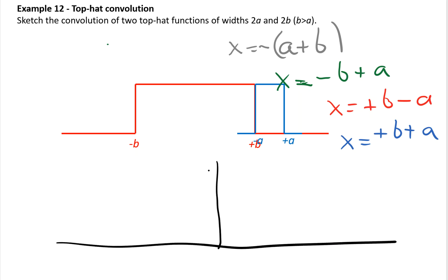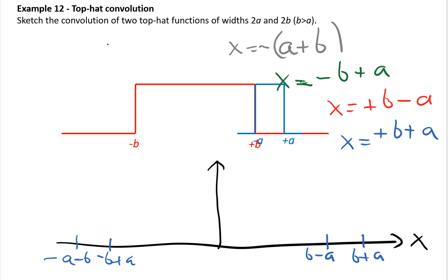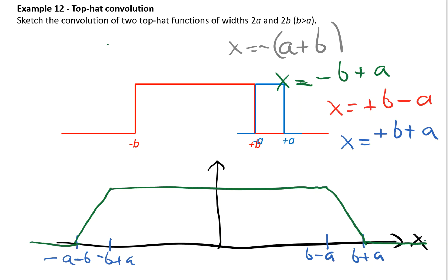With this information we can now sketch the convolution. Drawing the axes with x on the horizontal axis, we mark the key positions: minus (a plus b), minus b plus a, then by symmetry b minus a, and b plus a. The convolution has a linear increase from minus (a plus b) to minus b plus a, a constant value between minus b plus a and b minus a, and then ramps down to zero at b plus a. Essentially the convolution looks like a top-hat function but with sloping edges — a trapezoid shape. This gives us the convolution of the two top-hat functions.